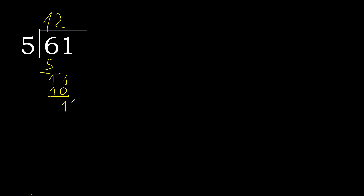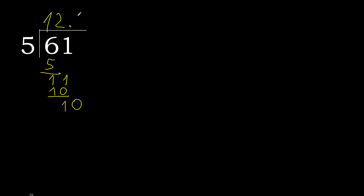Next — that is not a number, therefore complete. Always complete with 0 here with a point: 0 point, making 10. 5 multiplied by 2 is 10. 10 minus 10 is 0. Therefore finish: 61 divided by 5 is 12.2.